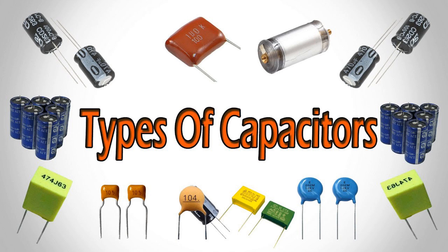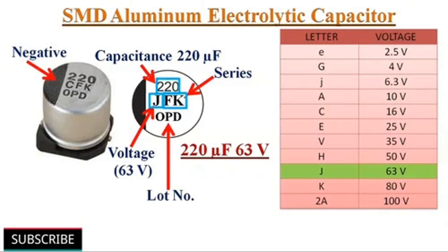Capacitors serve as devices for storing electrical energy in an electric field. Unlike batteries, which store energy in a chemical form, capacitors store energy in an electrostatic field created between two conductive plates separated by an insulating material called a dielectric. The amount of energy stored in a capacitor is proportional to the voltage applied and the capacitance of the capacitor, and can be calculated using the formula E = ½CV².